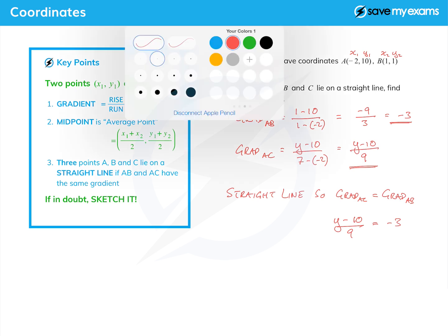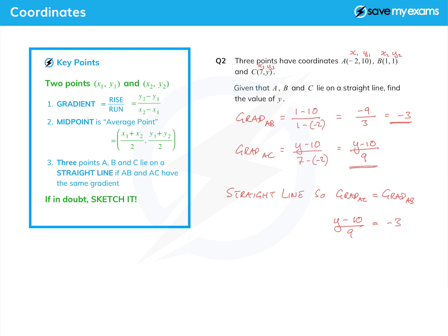So how do we get rid of the fraction? We multiply both sides by 9, and the 9s cancel on the left, and that gives me y minus 10 is equal to -27. Then to get the y on its own we add 10 to both sides, and we get y equals -17. And that is that.